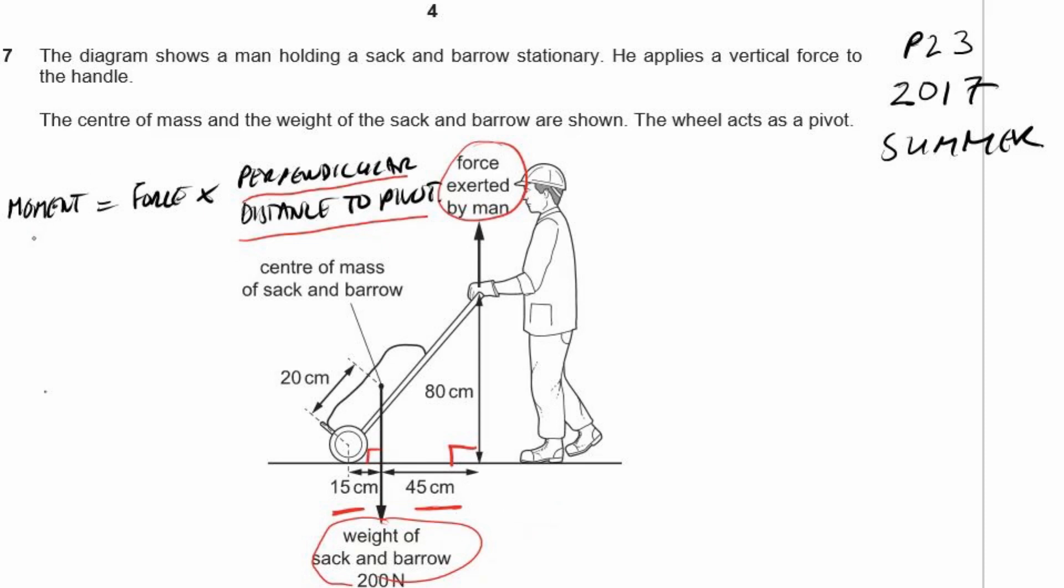So we can straight away use this moment equals force times perpendicular distance once we realize that these values, 15 centimetres and 45 centimetres, well, technically 45 plus 15, represent the distances from the pivot.